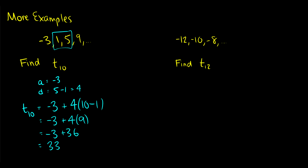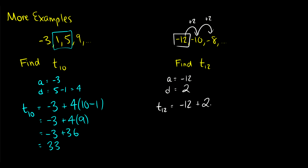What about negative 12, negative 10, negative 8 — find the 12th term? We know a is negative 12. For the difference, we can see that to get from negative 12 to negative 10 we just add 2, and from negative 10 to negative 8 we add 2. So the difference is 2. Therefore t12 equals the first term plus the difference times (n minus 1), which is 12 minus 1. So negative 12 plus 2 times 11, which is negative 12 plus 22, which equals 10. Our 12th term is 10.